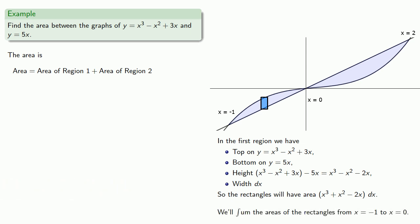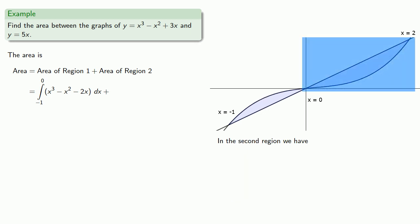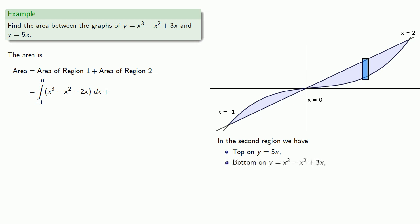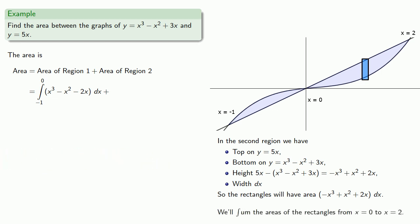We sum the areas of these rectangles from x equals negative 1 to x equals 0. For the second region, we draw our representative rectangle: the top is on y equals 5x, the bottom is on y equals x cubed minus x squared plus 3x, and the height is negative x cubed plus x squared plus 2x. The width is dx, giving area negative x cubed plus x squared plus 2x, times dx. We sum from x equals 0 up to x equals 2.